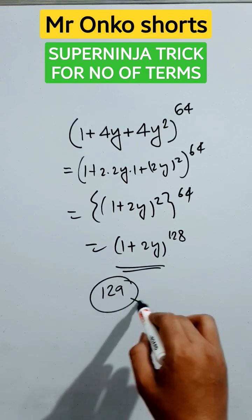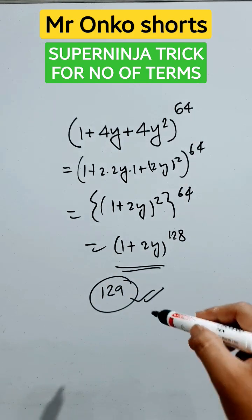129 terms are there in this expansion. This is the shortest way to find.